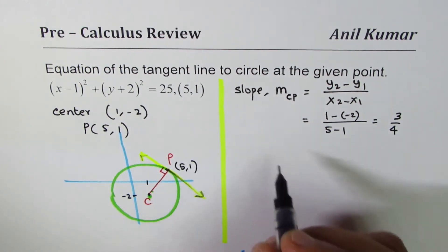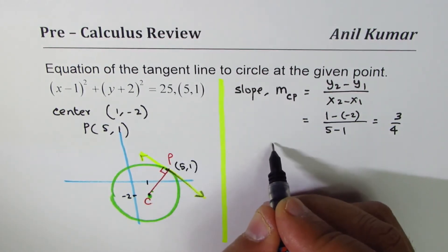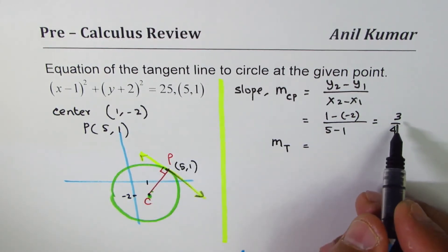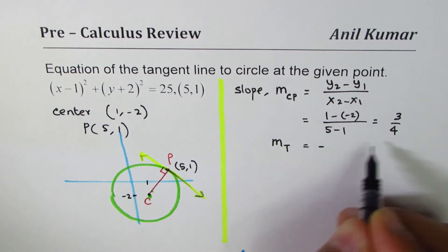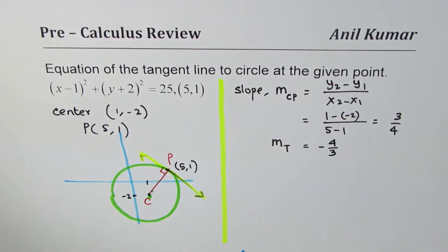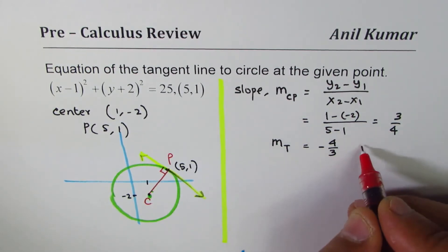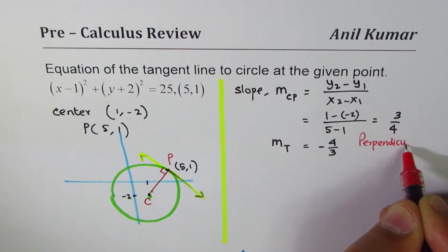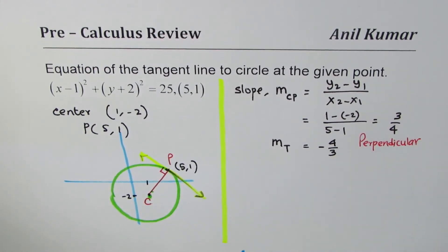Now let the slope of the tangent line be m_T. Now since this is perpendicular, it's going to be negative reciprocal. So negative 4 over 3. Does it make sense to you? So since it is perpendicular, correct.